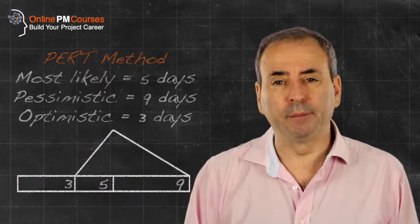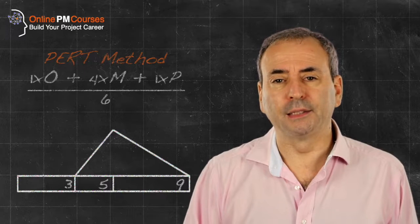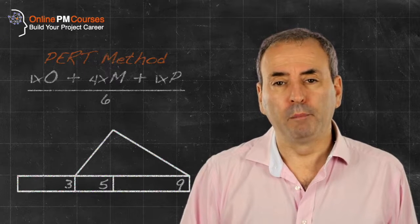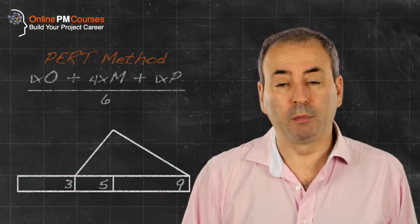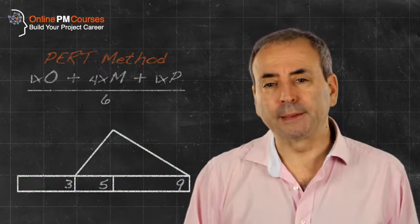But we don't give these equal weighting because there's a reason why the most likely is the most likely. So we give it a higher weighting. Typically, the PERT method suggests that we multiply both the optimistic and pessimistic by one and the most likely by four. We add them together and divide by six.